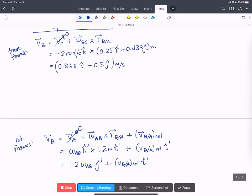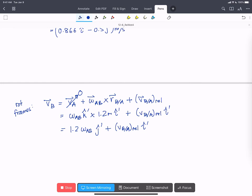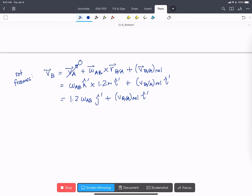And so that's going to come out to 1.2 omega AB J hat prime plus VB with respect to A relative the scalar I hat prime. Now we've got one expression for VB in I and J and one expression in I prime and J prime. And so we'll want to translate coordinate systems so we can combine them. Now because our two unknowns, omega AB and VB with respect to A relative, only occur in I prime or J prime, they're already separate. We'll have an easier time of solving if we translate everything into the I prime and J prime coordinate system. So that's what we're going to do.